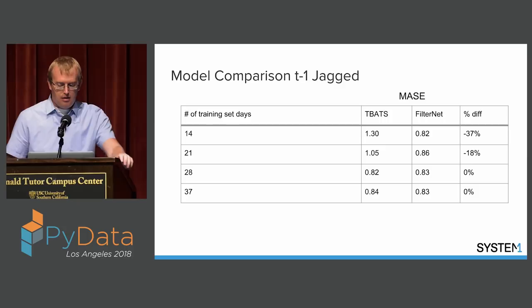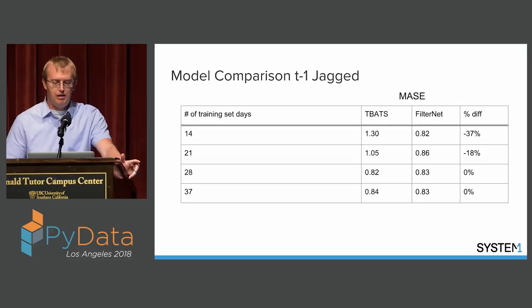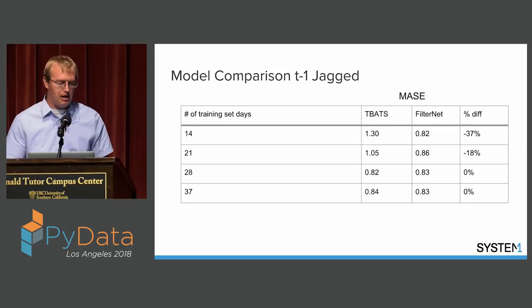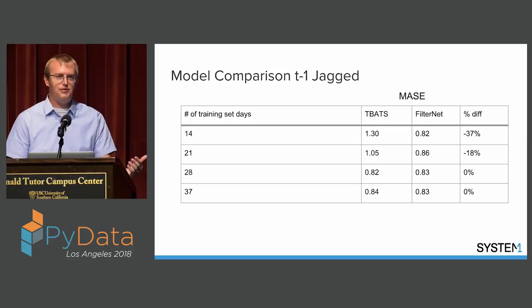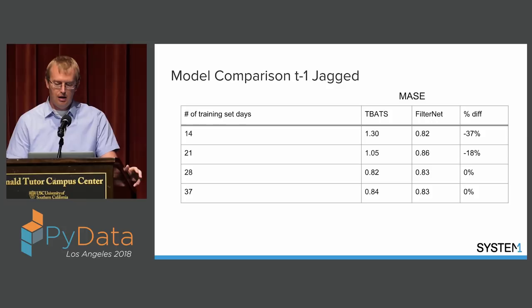I was curious why TBATS and FilterNet performed similarly on this dataset, so I investigated how training data size impacts performance. Reducing training data showed that TBATS starts to fall off after getting down to 21 days — it doesn't have enough data to pick up seasonal trends, especially weekly patterns with only three weeks. However, FilterNet continues to perform really well even with shorter and shorter datasets, which is very encouraging.